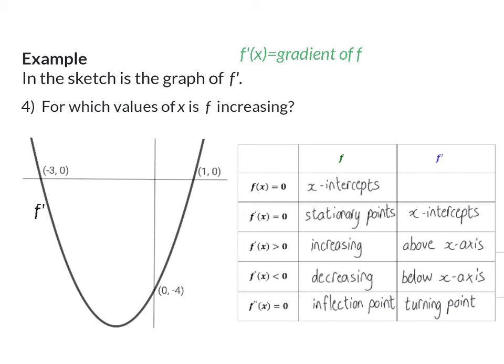Question four: for which values of x is f increasing? The table helps us to know that f is increasing when the derivative is above the x-axis. Looking at the graph of the derivative, we can see that it is above the x-axis for all x values smaller than minus three and again above the x-axis for all x values bigger than one. These are then also the x values where f is increasing. So our answer for question four will be all x values smaller than minus three, or all x values bigger than one.